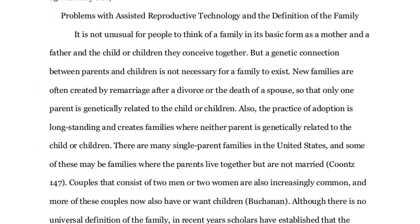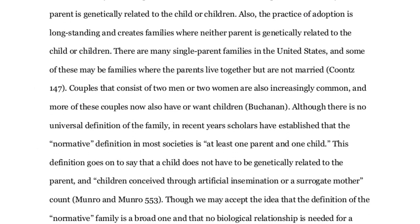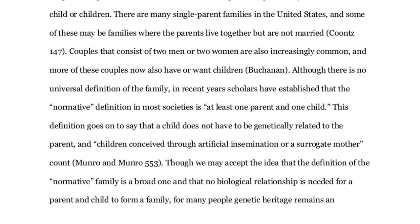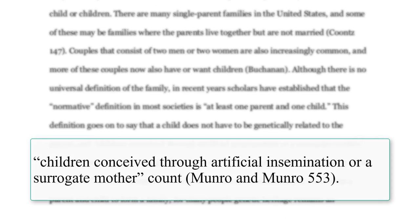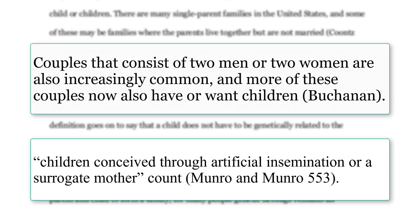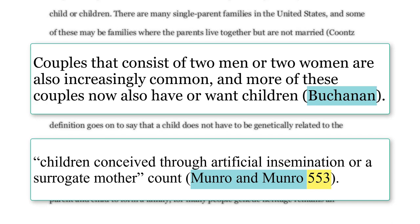In-text citations go in the body of your paper and are used for direct quotes and summarized or paraphrased information. In-text citations usually include an author's last name and page number, if there is one.